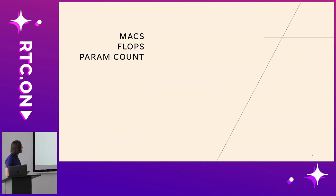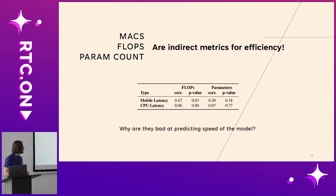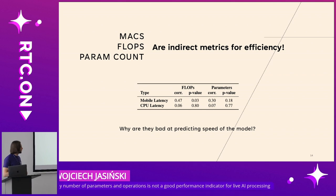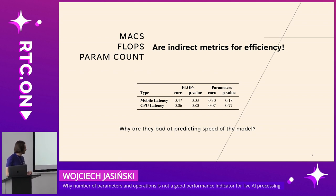Still not good enough. MACs, FLOPs, and parameter count can be useful and give you a hint about model speed, but they are indirect metrics for efficiency. As you can see on this table, comparing various model architectures, the correlations are much lower than we might anticipate — for example, the correlation between mobile latency and FLOPs is weak, and it's even worse with parameter count. So why are they bad at predicting model speed? Let's find out.